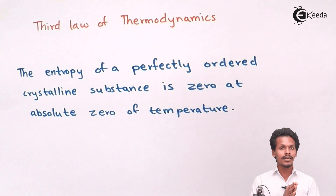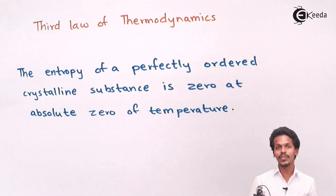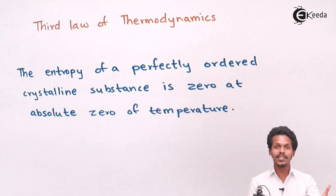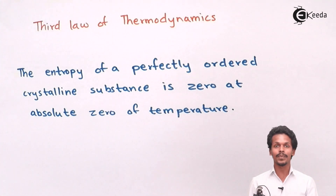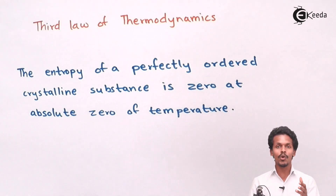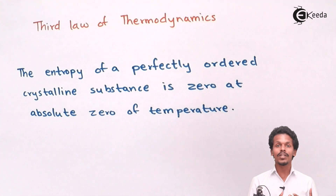Whether it is a solid, liquid, or gas — as we know, solid has less entropy compared to liquid and gas. But if we are talking about a pure crystal at absolute zero temperature, that is zero Kelvin, any substance at zero Kelvin will form a pure crystal. At that point, the substance will have an entropy of zero, meaning there will be no vibration and no disorder; all atoms or molecules will be arranged in an ordered manner.